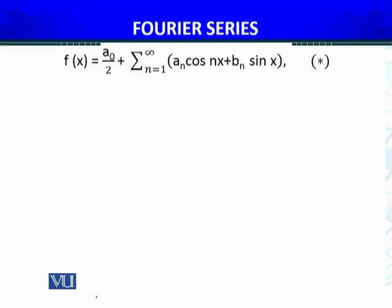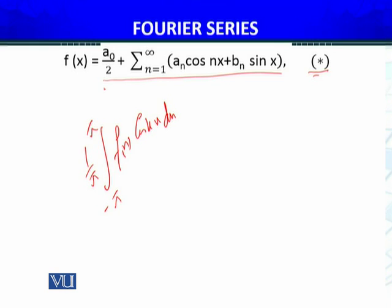For the Fourier series, we have already determined a_naught. Now I have to determine a_n and b_n. To determine a_n, I will multiply this equation throughout by cos(kx). The left hand side becomes f(x)cos(kx), and I will integrate from minus π to π and multiply by 1 over π.